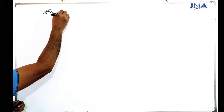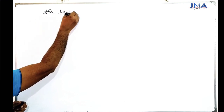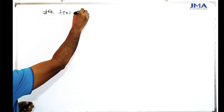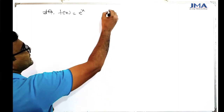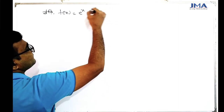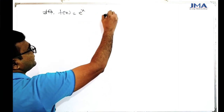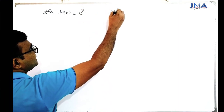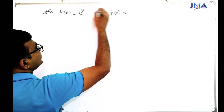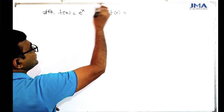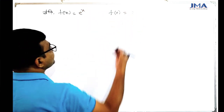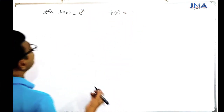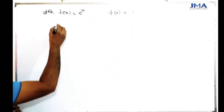Now, the second example: f of x equals e to the power x. First, f(0) equals e to the power 0, which equals 1.